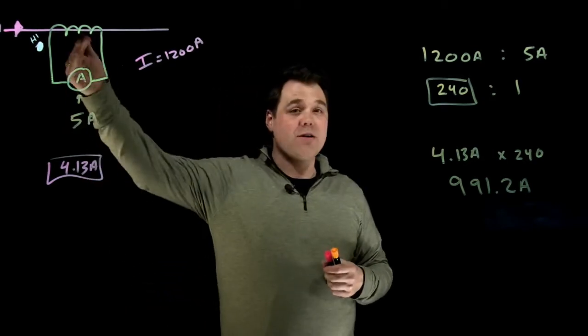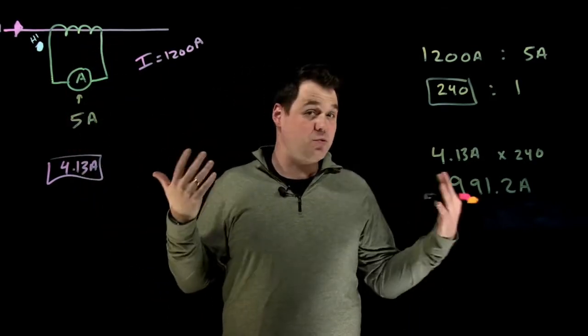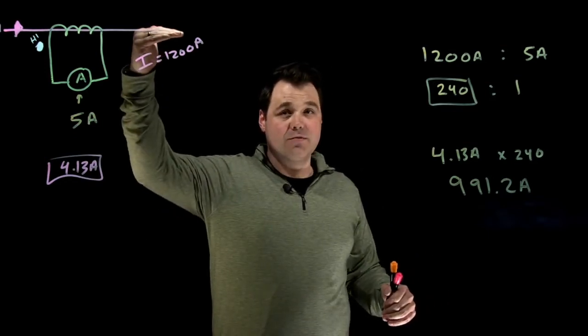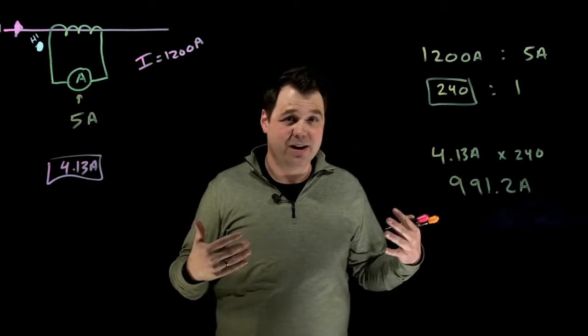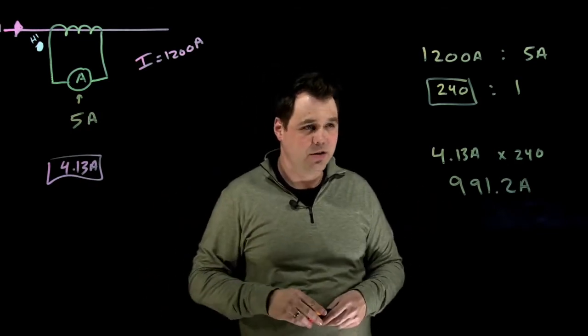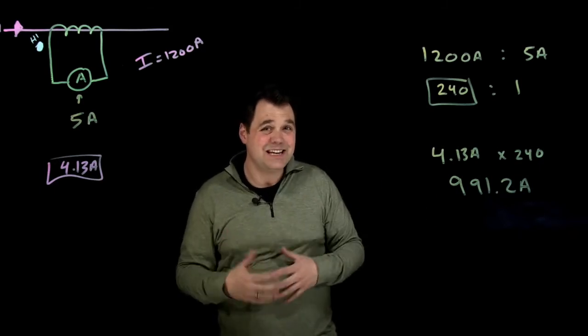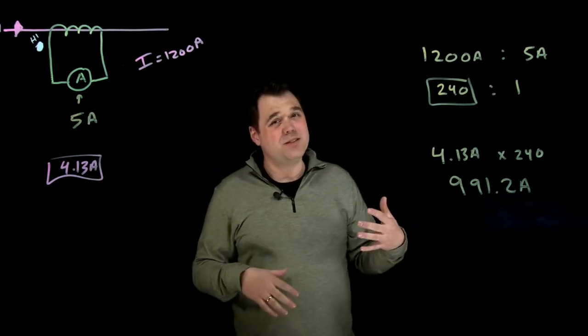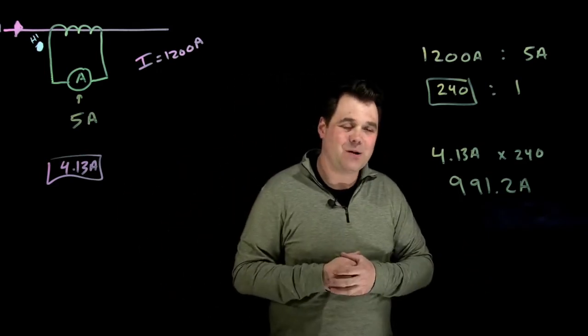And keep in mind, as the primary current goes up, just like a transformer, the secondary current goes up. So it's rated for if there's 1200 amps flowing on the primary, five amps flowing on the secondary. That's how that rating works. They are proportional to each other. That's great. That would be how you would do a calculation with a CT. And of course, I'm going to link another video at the end that has some more CT and PT examples. So keep a look out for that.